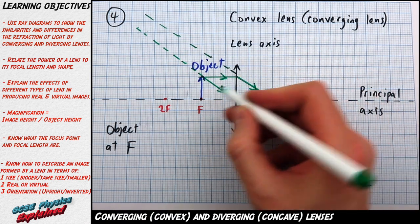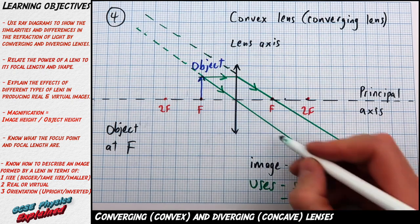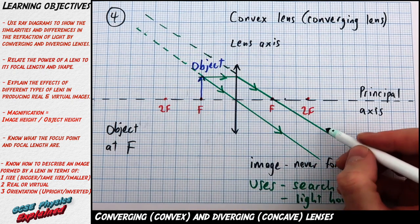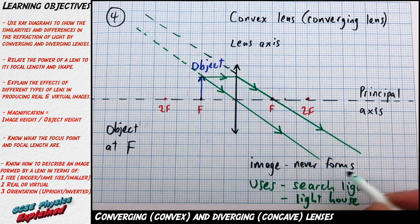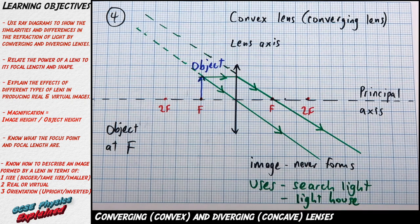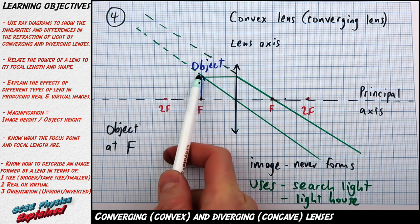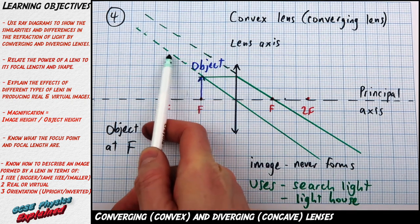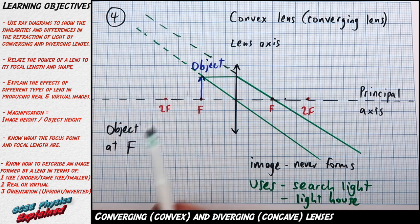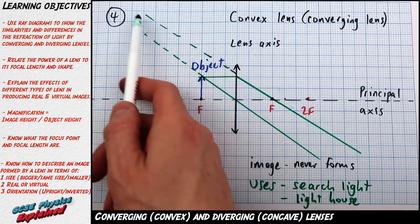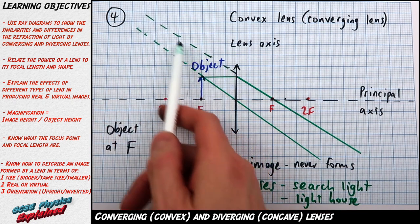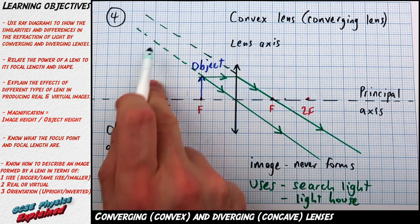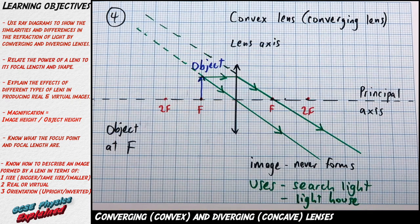Any rays that go over to the right are real rays — draw them solid and put arrows on them. Now these rays here, because I've had to draw them going over to the left, they are not real rays. So we draw them with dotty lines and don't draw arrows on them.